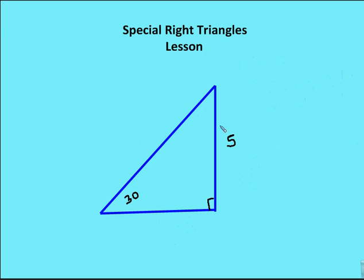And then if we have another 30-60-90 triangle where x is 5, I have 5-root 3 for the side opposite 60 degrees, and 2x would be 10. You see how simple this can be.